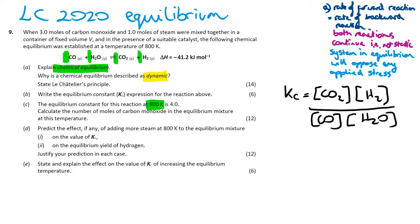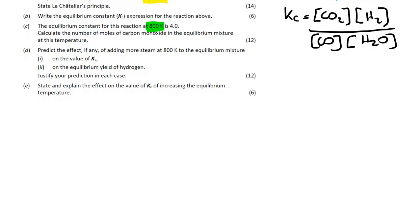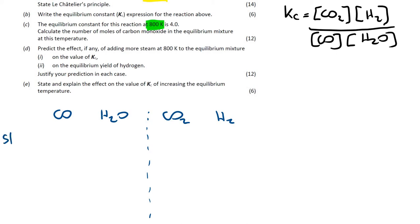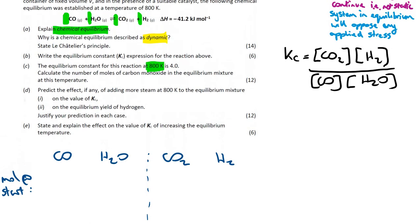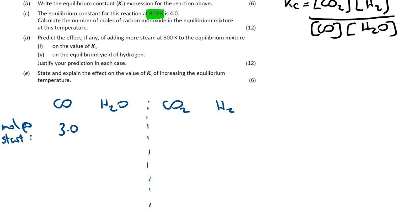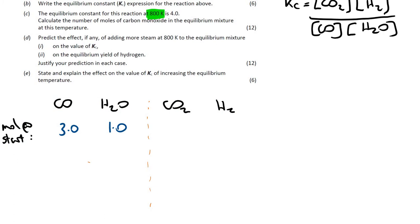We're given information at the start of the reaction, so I'm going to draw a table. We have carbon monoxide, H₂O, CO₂, and H₂ as reactants and products. I'll write the moles at start. We're told 3 moles of carbon monoxide and 1 mole of steam were mixed together. At the start there's no carbon dioxide and no hydrogen present, so those are 0 and 0.